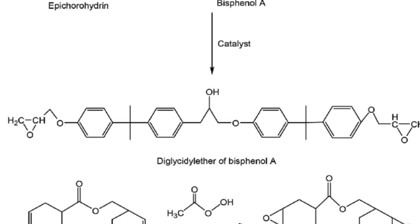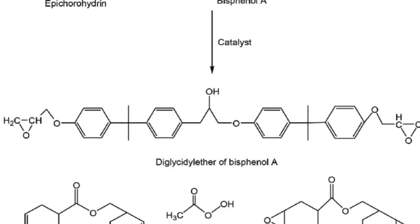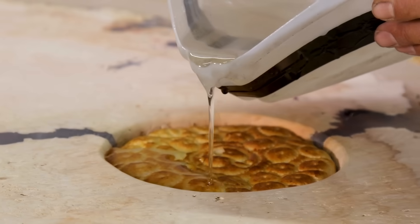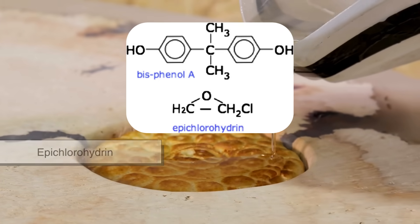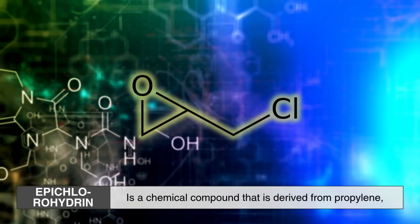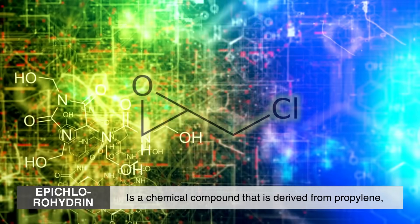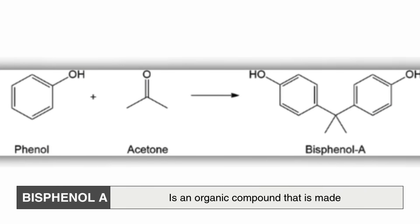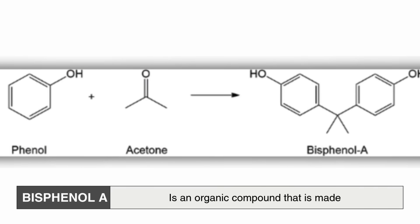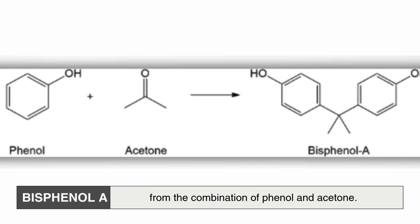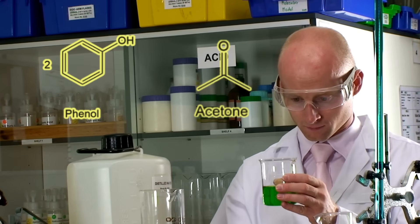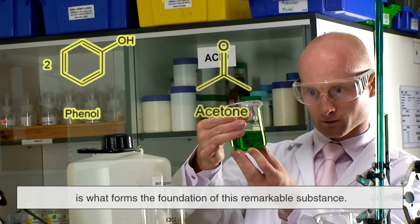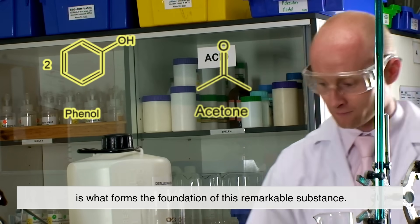The creation of epoxy resin starts with the synthesis of its basic building blocks, which are the key components that will give the resin its unique properties. These components typically include epichlorohydrin and bisphenol A. Epichlorohydrin is a chemical compound derived from propylene, which is a byproduct of petroleum refining. Bisphenol A, or BPA, is an organic compound made from the combination of phenol and acetone. These two raw materials are the core ingredients in epoxy resin, and their combination forms the foundation of this remarkable substance.